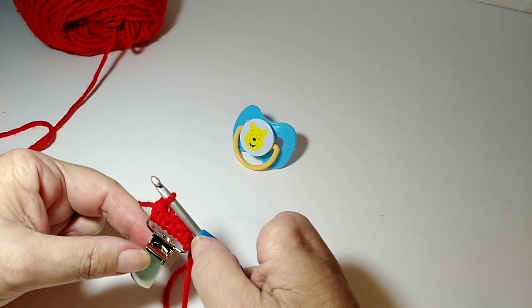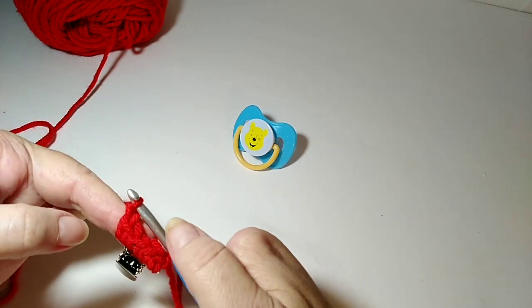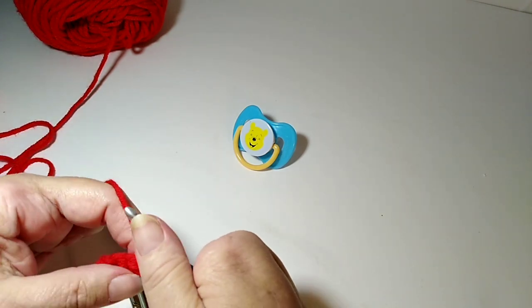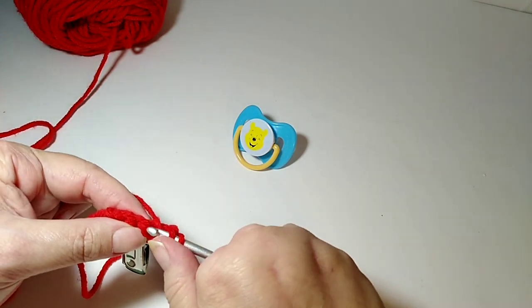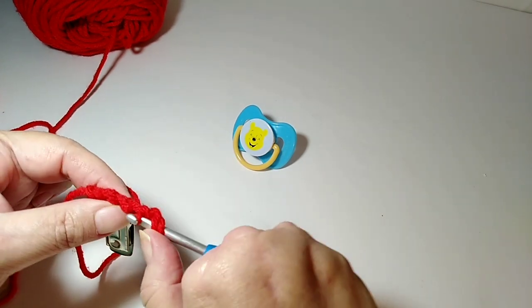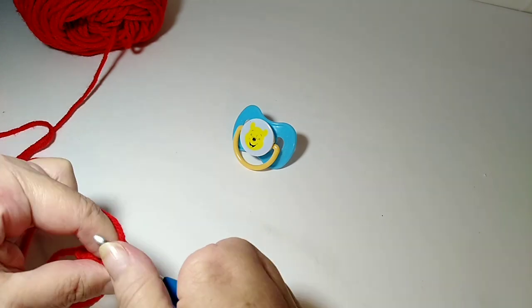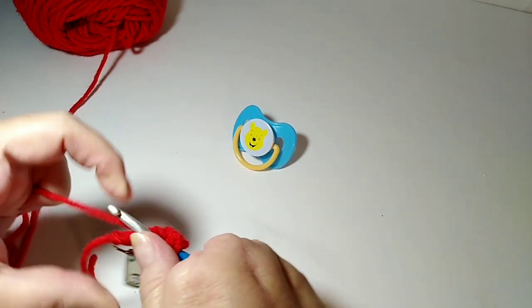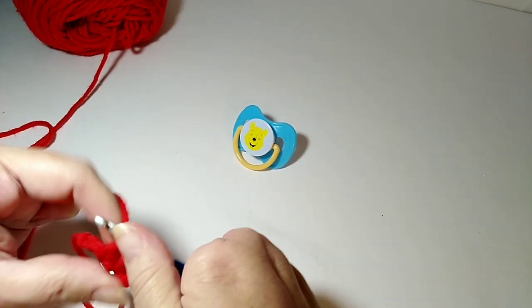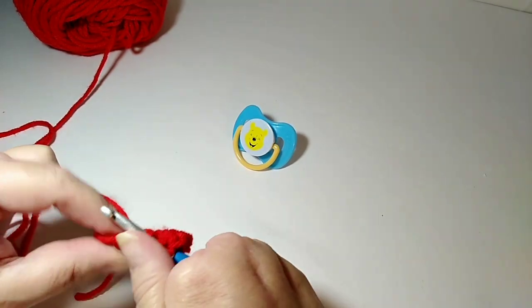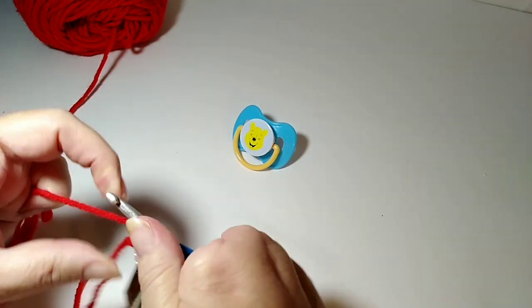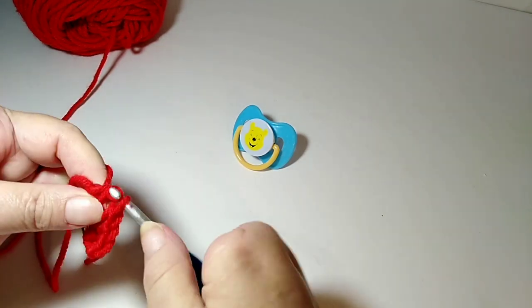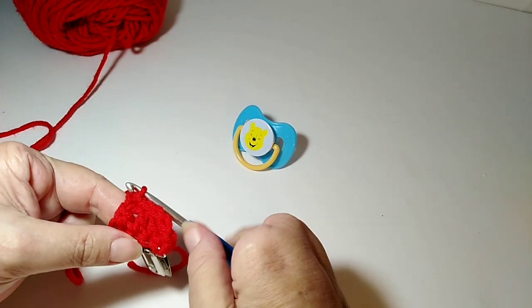And so I'm going to chain one, turn my work, and I'm going to do double crochets. And I'm going to do a double crochet right back into that very first stitch, and make that a double crochet. And then a double crochet in the second stitch, and a double crochet in the third stitch, and then one more time in this fourth stitch. Okay, and that's what we got.